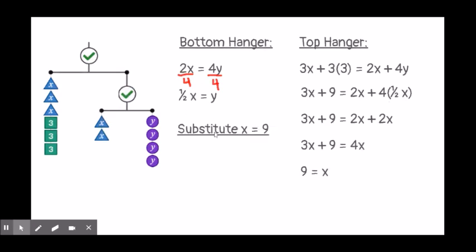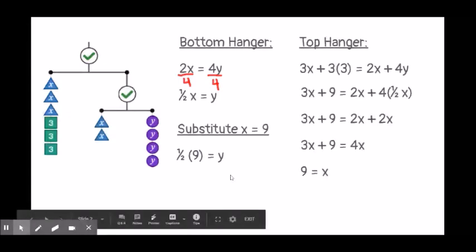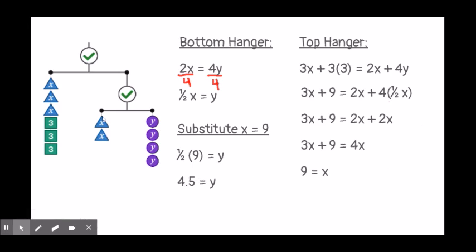I'm going to figure out what y is by substituting x equals 9. That gives me one-half times 9 equals y. When I do the math, I get that y is equal to 4.5. So now I know that these x's equal 9 and the y's equal 4 and a half, and the mobile will balance.